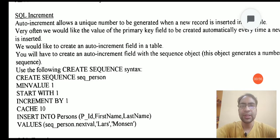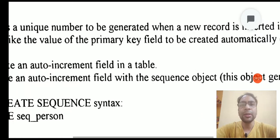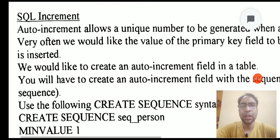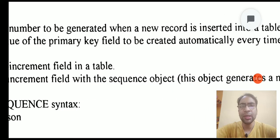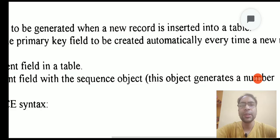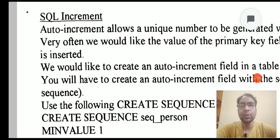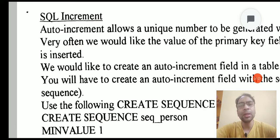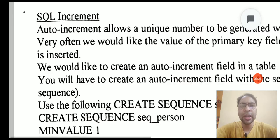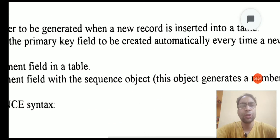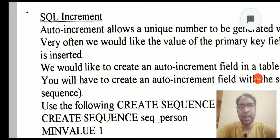Let us see how we can use this concept. The auto increment in a table basically allows a unique number to be generated whenever a new record is inserted into a table, and that is also an incremented value. So if the previous record has the value 05, then 06 should automatically be generated and inserted into the next new record. Very often we would like the value of that primary key field to be created automatically.